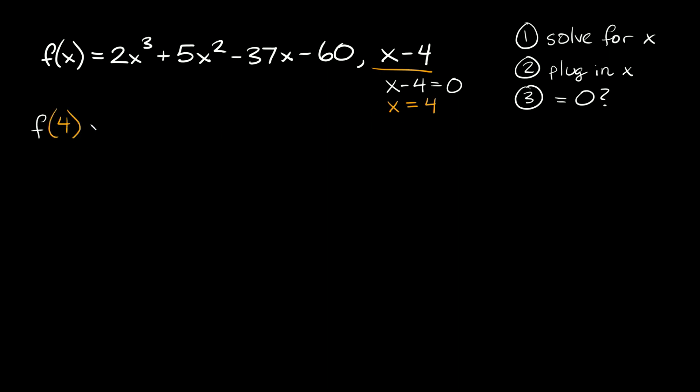So we're going to say f(4) = 2(4³) + 5(4²) - 37(4) - 60. Now this is equal to, well first of all, 4³ is equal to 64, and 64 × 2 = 128. Here 4² = 16, and 16 × 5 = 80. So plus 80, and then here 37 × 4 = 148, so that's minus 148, and then minus 60.